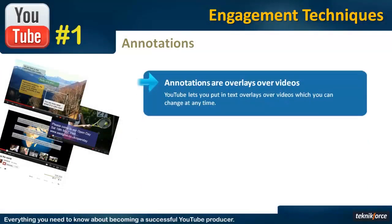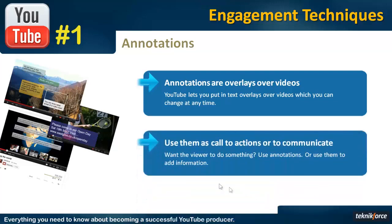Annotations are overlays over the actual video. Right now, YouTube supports only text annotations and you can put them right on top of the video. It hides the content of the video but it's very effective because annotations support linking and can be used to make the viewer take action. You can use them as call to actions, ask the user to click on annotations leading to a different video, the subscription button, or a different website. Sometimes you can use it just to communicate with the user — if something is missing in the video or you want to add to any content. So this is the purpose why annotations are pretty effective as call to actions and as a communication medium.